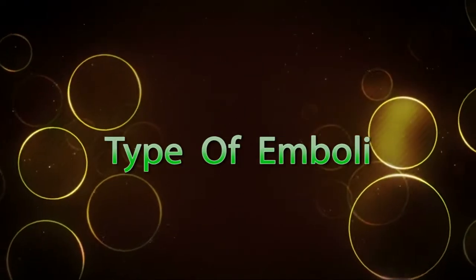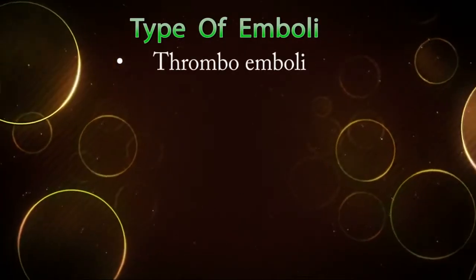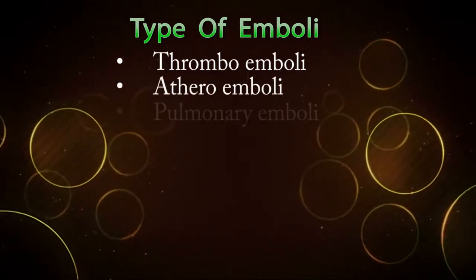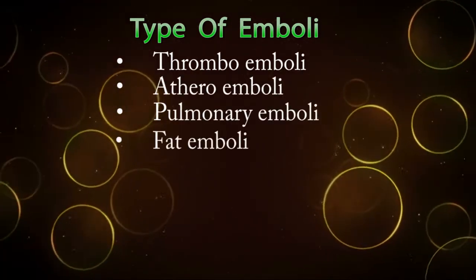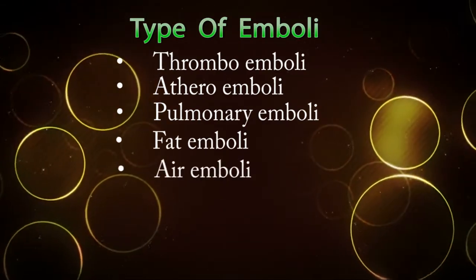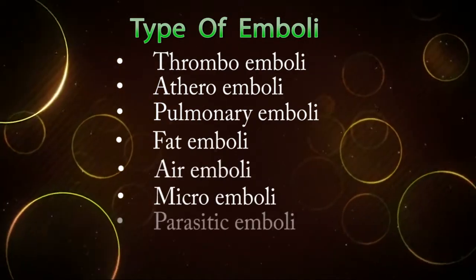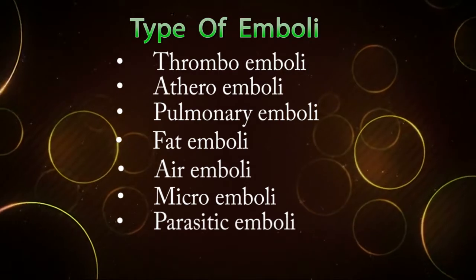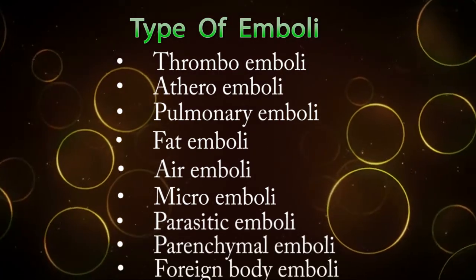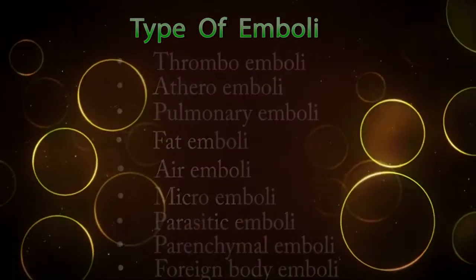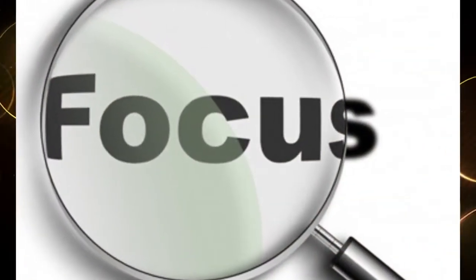Types of emboli include: thromboembolism, atheroembolism, pulmonary emboli, fat emboli, air emboli, microemboli, parasitic emboli, parenchymal emboli, and foreign body emboli. We are going to see each type of emboli in detail.